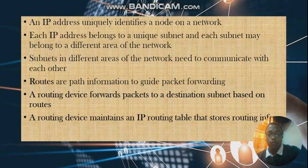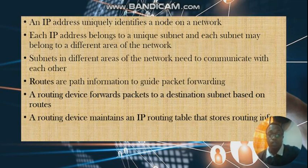We have what we call routes, and routes are paths that guide packet forwarding so that communication between two routers can be achieved, or communication between a client and a server can be reached. A routing device forwards packets to a destination subnet based on these routes, and maintains an IP routing table that stores routing information — basically the other routers or networks that our router is aware of.